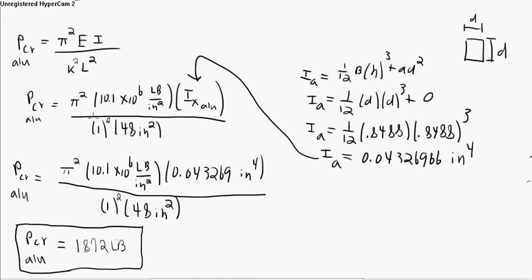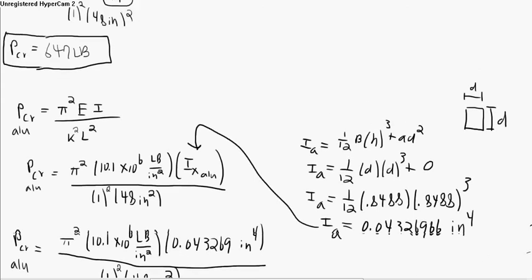We also know the modulus of elasticity which was given in the problem. We know what the k is. It's 1. And we know what the length is. It's 48 inches squared. So what we do is we go ahead and just plug all this in your calculator. Plug and chug. And you're going to get 1,872 pounds on that, on this right here.